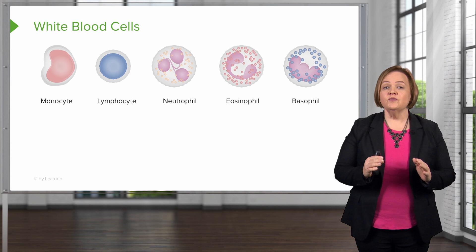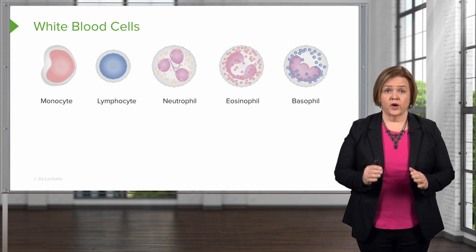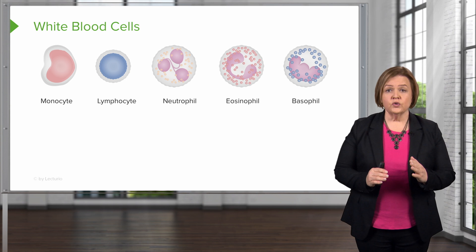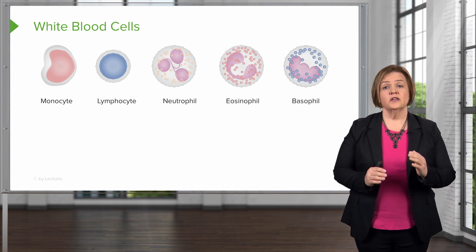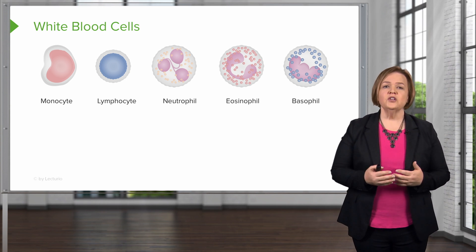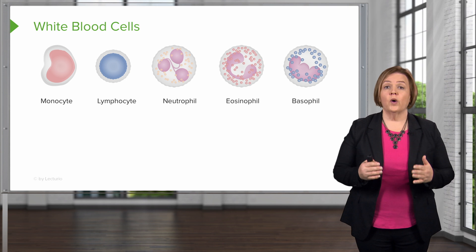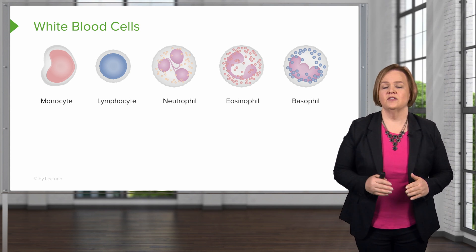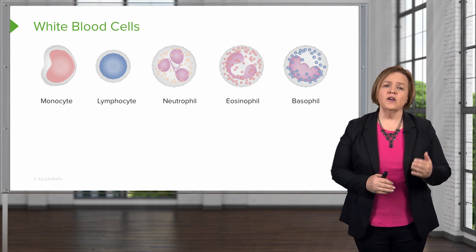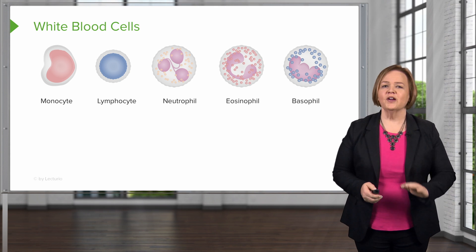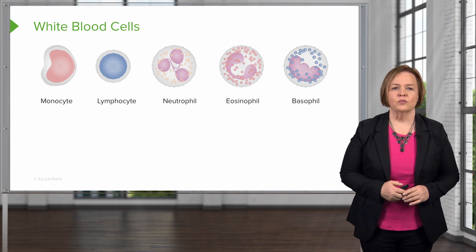You've got five different types of white blood cells: monocytes, lymphocytes, neutrophils, eosinophils, and basophils. So when you hear us talk about white blood cells, know that there are five different types. You've got some pictures up there to let you see the differences, but we're going to break it down even more.